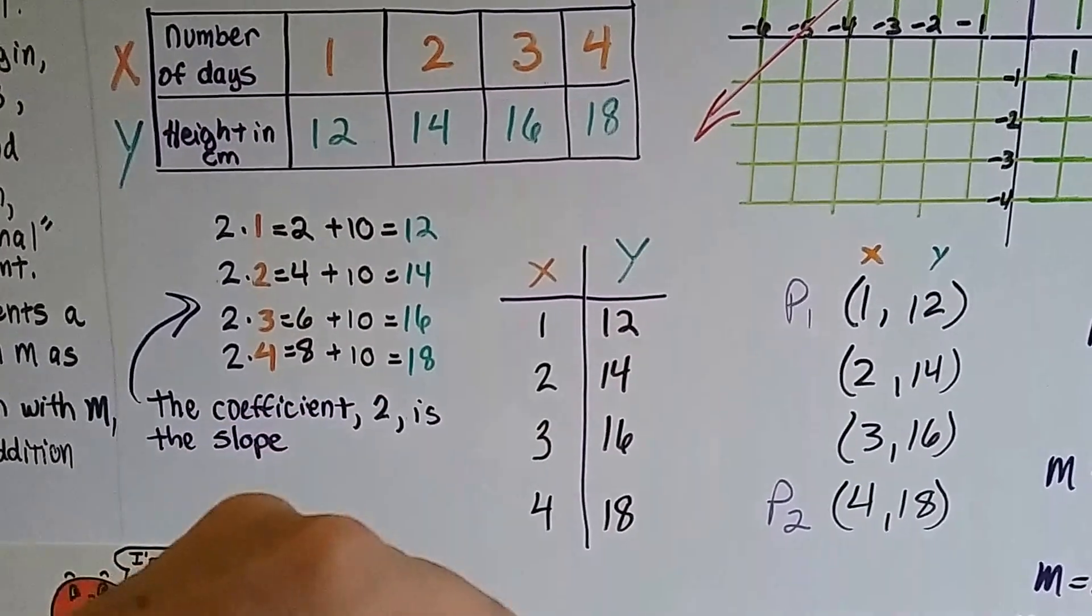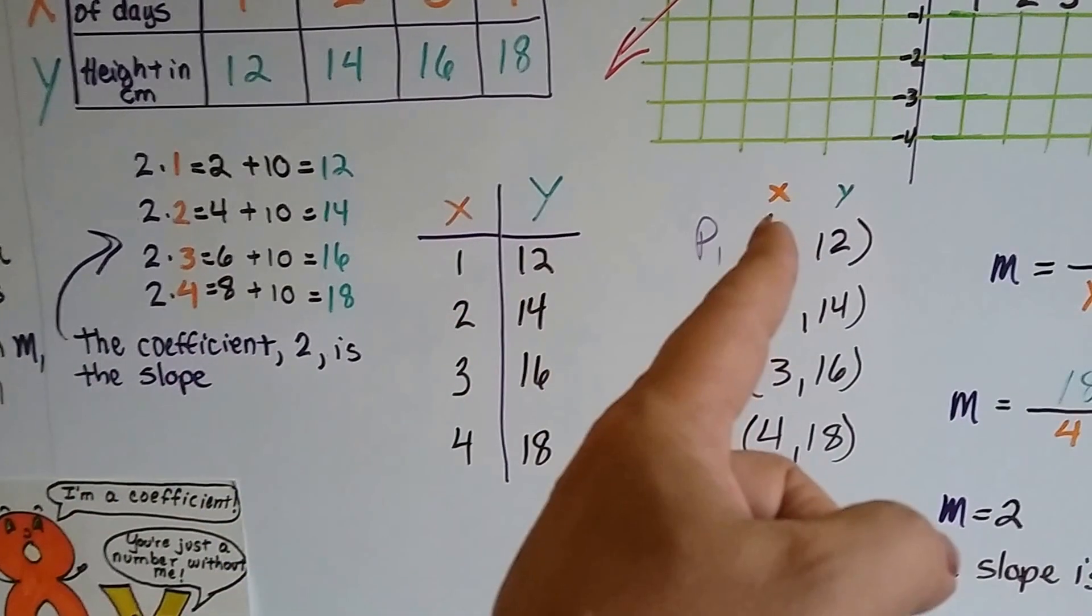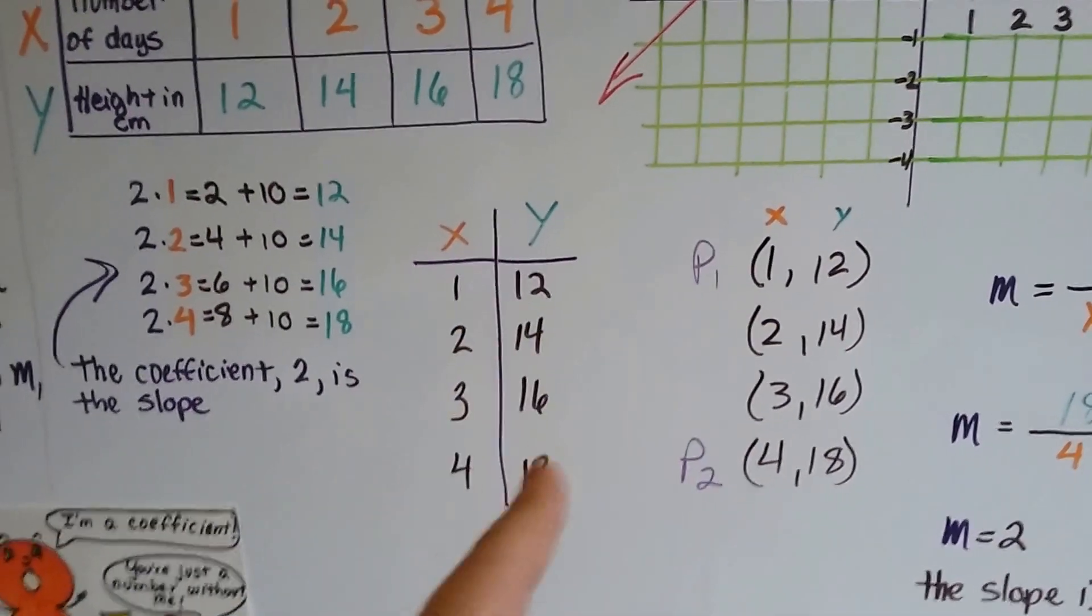Now I like to write it vertically, and they do that in high school and college. The reason I like to do this is because it shows our x, y coordinates very simply just by going across.